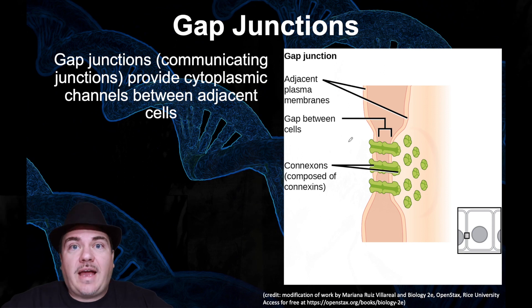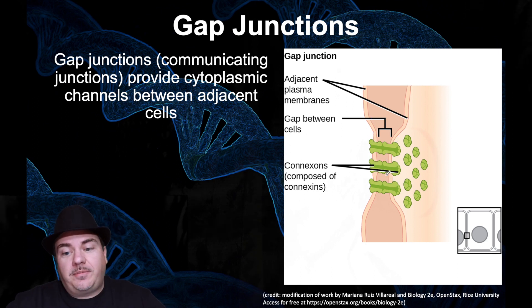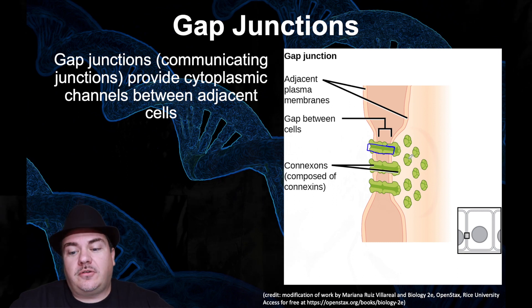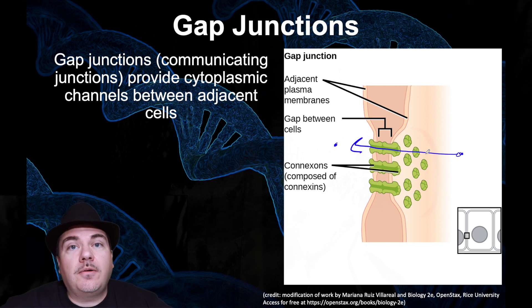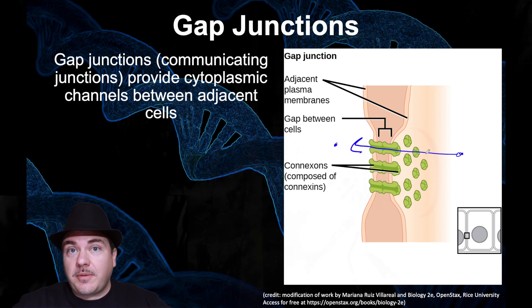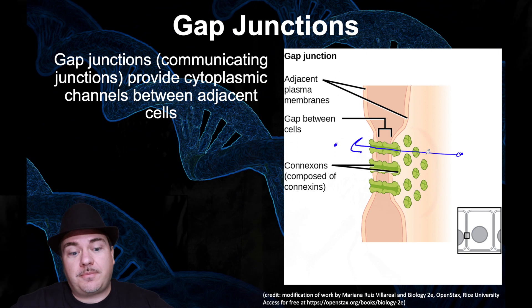The other type is called a gap junction. A gap junction again takes the plasma membrane of two animal cells and joins them together. The difference is there's a tunnel through the middle of the gap junction, which allows things to go from inside one animal cell, pass through the gap junction, to inside the neighboring animal cell. In other words, gap junctions perform similarly to plasmodesmata — plasmodesmata are the tunnels through the plant cell walls, while gap junctions are the tunnels through the animal cell plasma membrane.